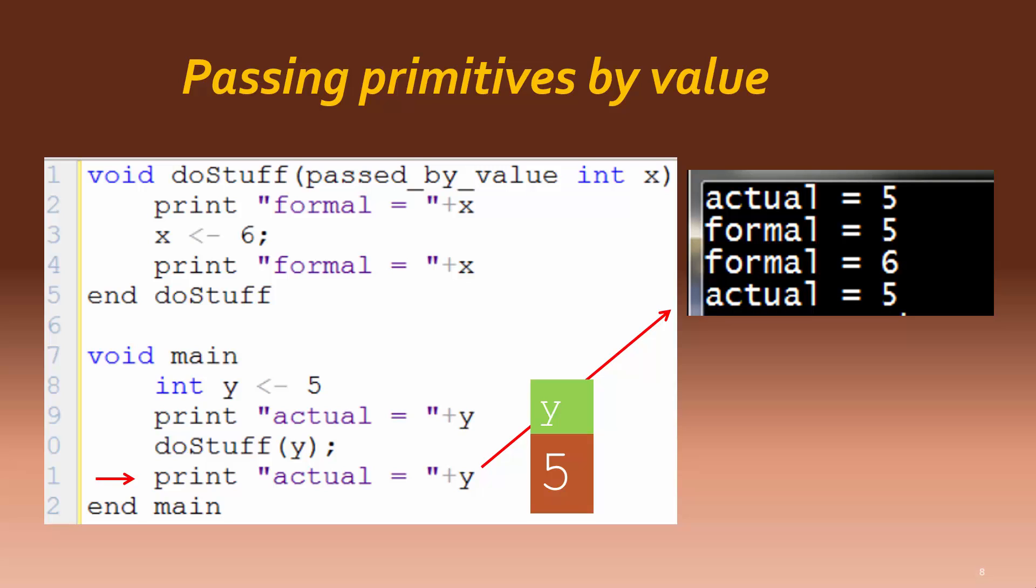Here is the important issue in this example. When the value of x in the doStuff method was changed, it did not affect the value of the actual parameter y in main, and therefore the last output shown was still the original value of the variable y. This whole process is called passing by value.